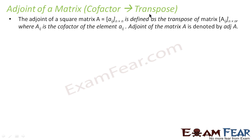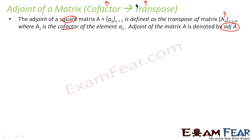The definition says: adjoint of a square matrix — note this is defined only for a square matrix — is defined by the transpose of the matrix where all the elements are cofactors of the element. Adjoint matrix is denoted by ADJ(A). It is generated by first finding all the cofactors, forming a matrix, and then finding the transpose of that matrix.